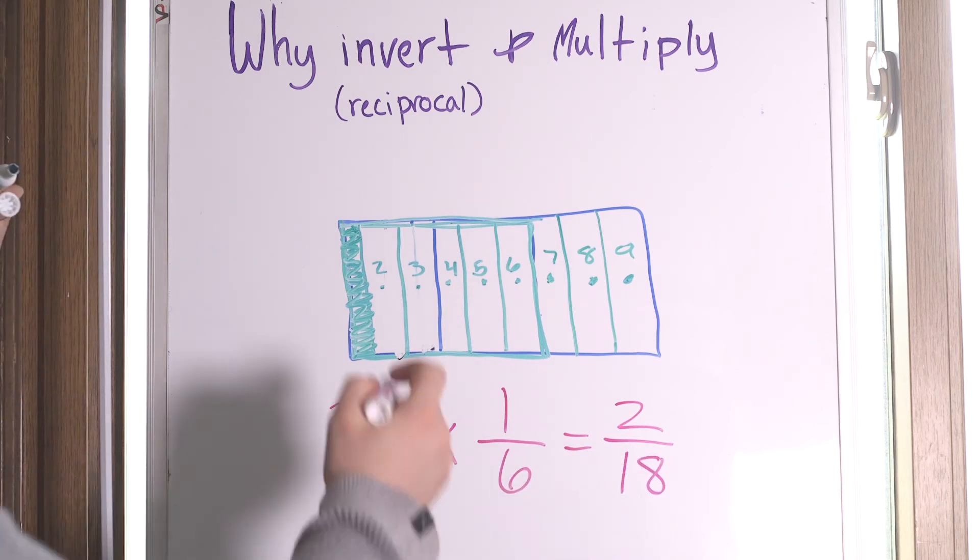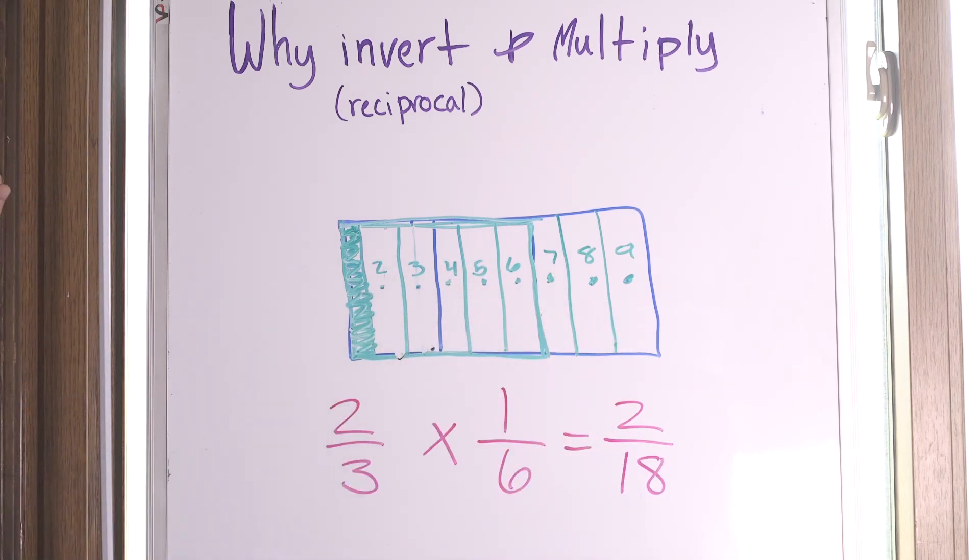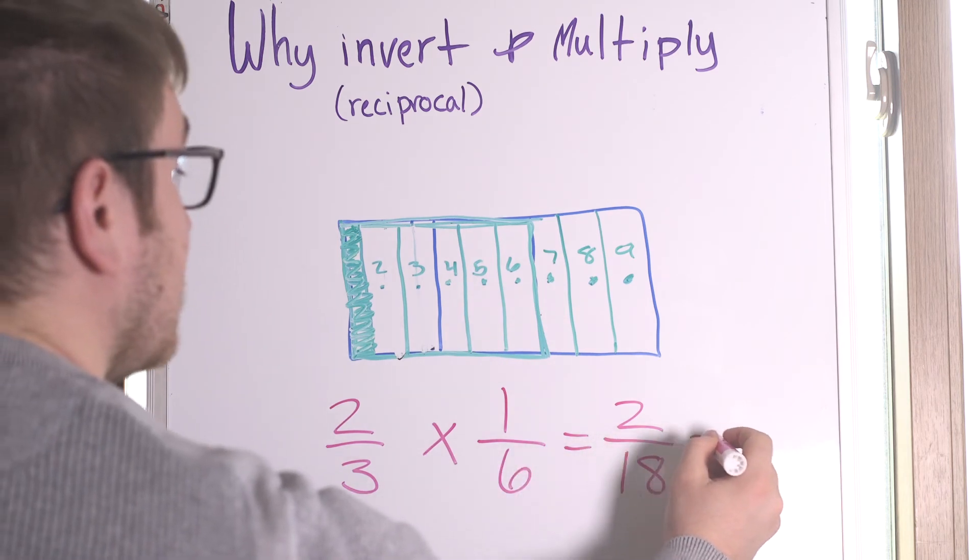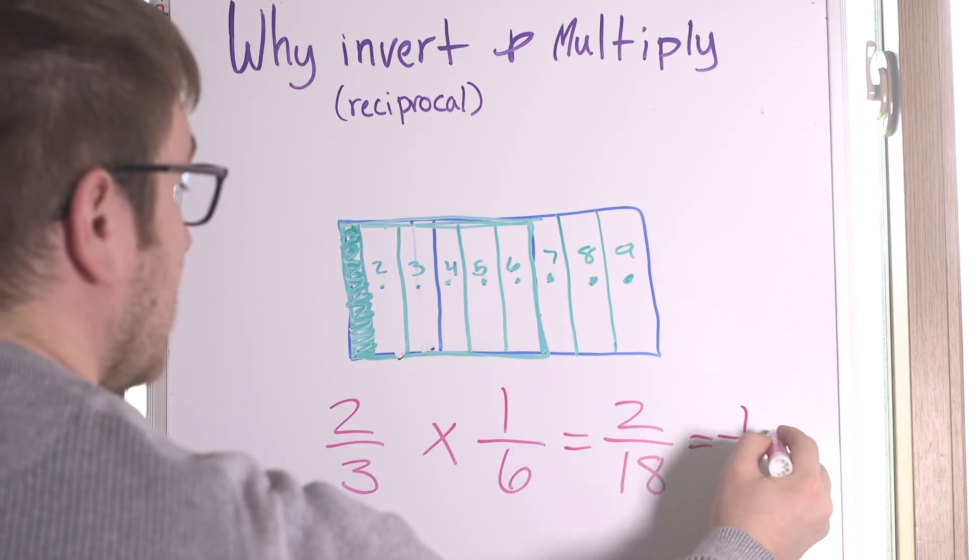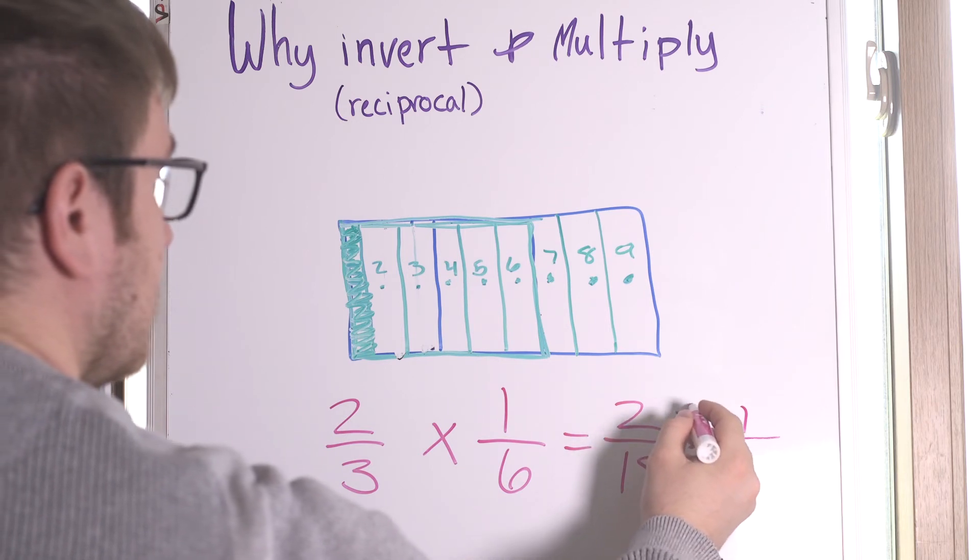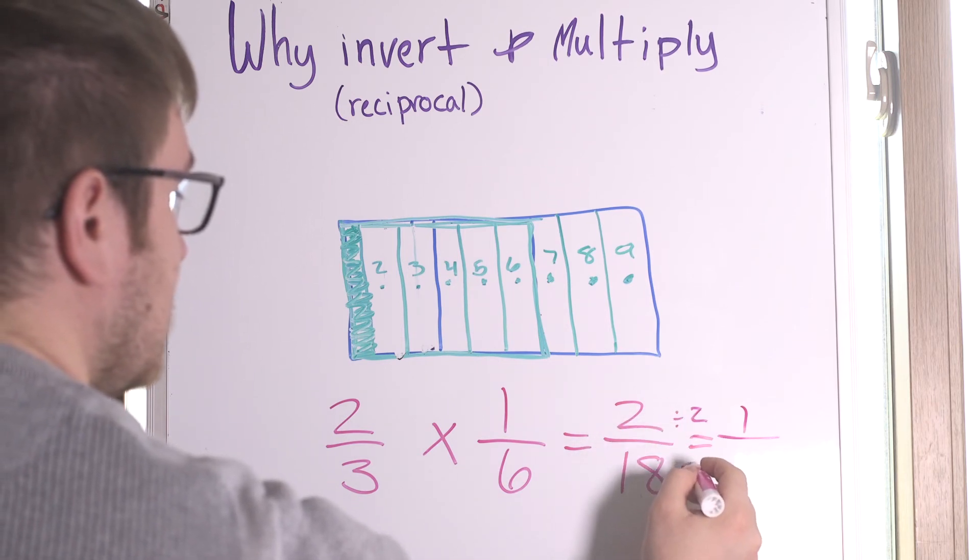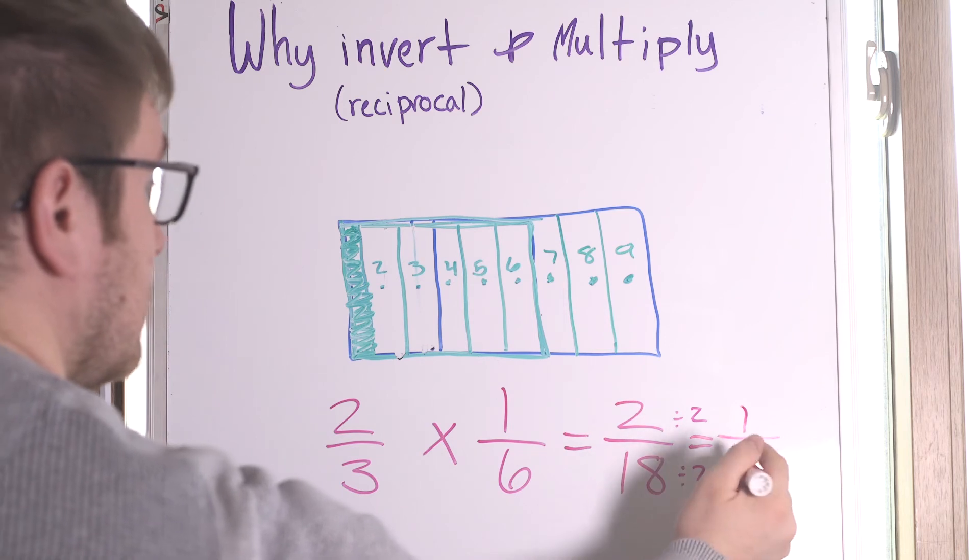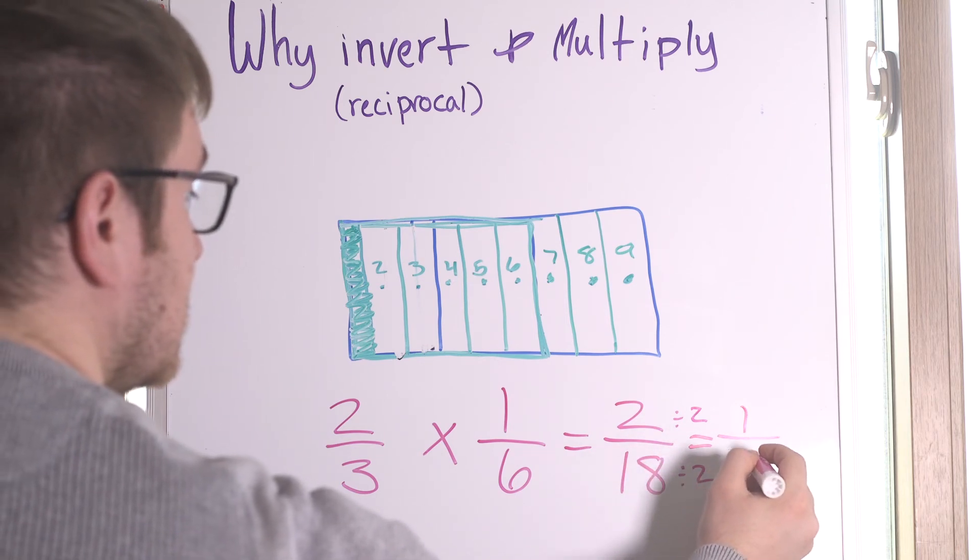Wait a minute, that's not the same as one ninth or is it? It is. It is. In fact, if we take two divided by two is one and 18 divided by two is nine.